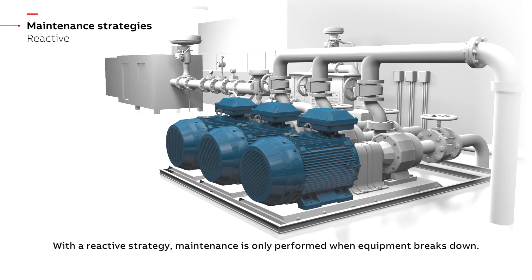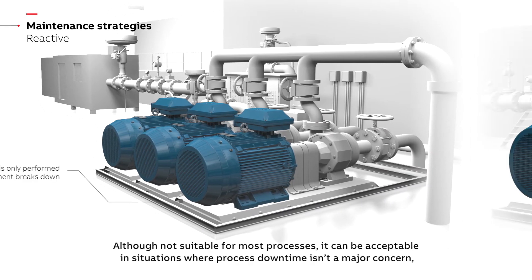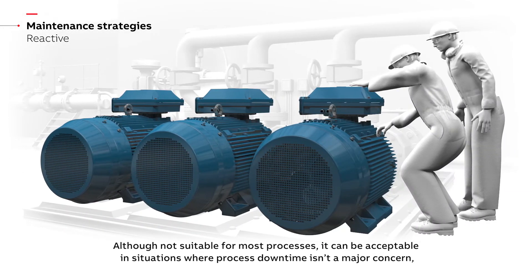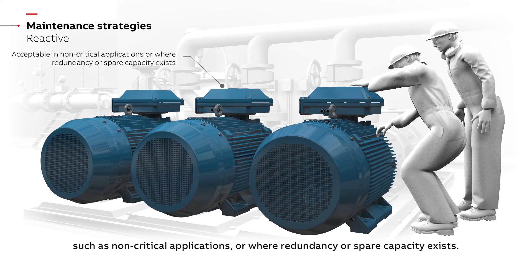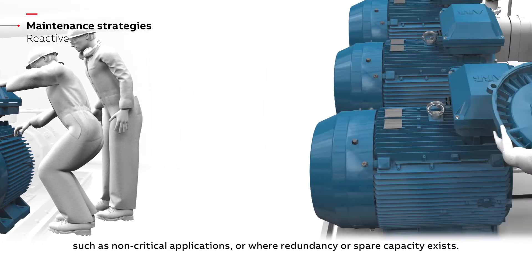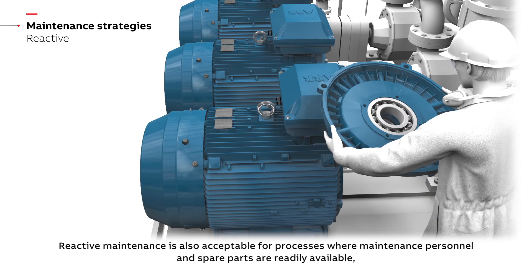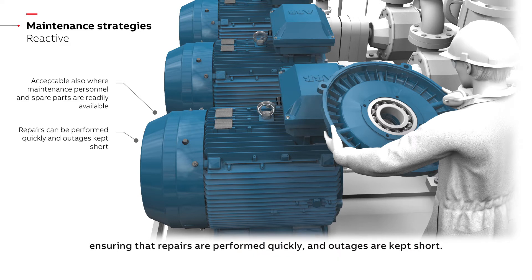With a reactive strategy, maintenance is only performed when equipment breaks down. Although not suitable for most processes, it can be acceptable in situations where process downtime isn't a major concern, such as non-critical applications or where redundancy or spare capacity exists. Reactive maintenance is also acceptable for processes where maintenance personnel and spare parts are readily available, ensuring that repairs are performed quickly and outages are kept short.